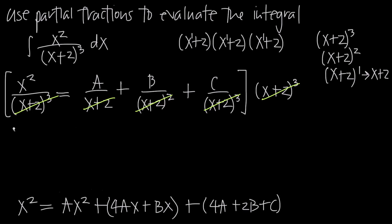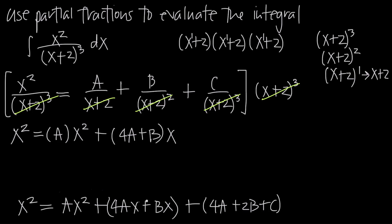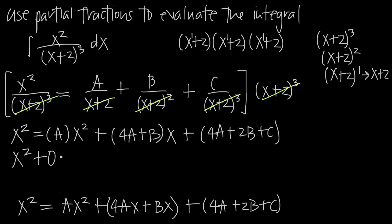Now we factor out the x variables. We get a times x squared, plus quantity 4a plus b times x, plus the constants 4a plus 2b plus c. We can write the left hand side as x squared plus 0x plus 0, because adding 0x and 0 doesn't change anything. We write it out that way because we want to compare coefficients from the left and right hand sides.